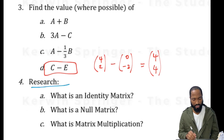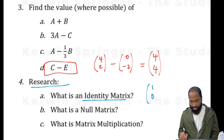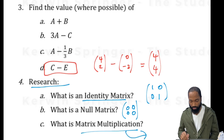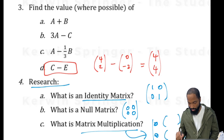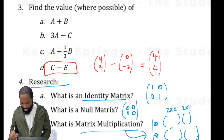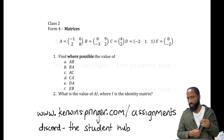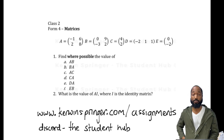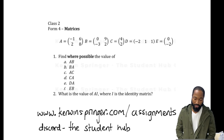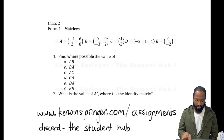There were some additional things to research — we'll learn about the identity matrix and the null square matrix in the next class. We just covered matrix multiplication, the two styles that normally come for CXC: 2 by 2 times 2 by 1, and 2 by 2 times 2 by 2. Here's the homework for the next class — you can download the PDF on my website, coenspringer.com assignments, or go to the student hub where students from all over the Caribbean can help you out.